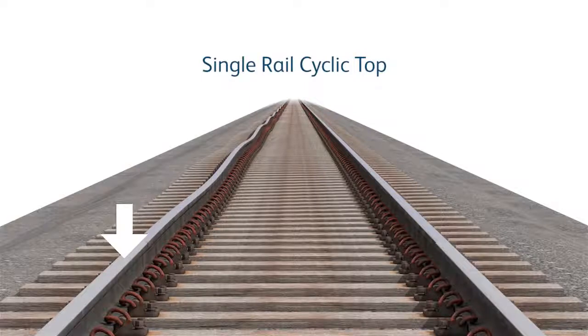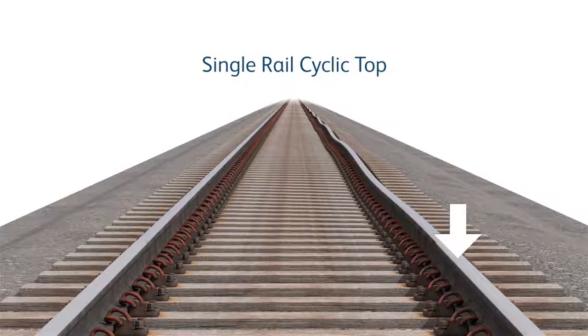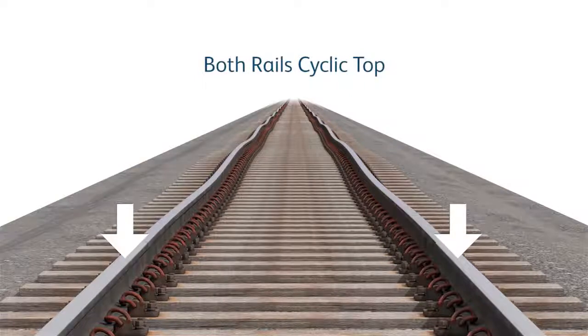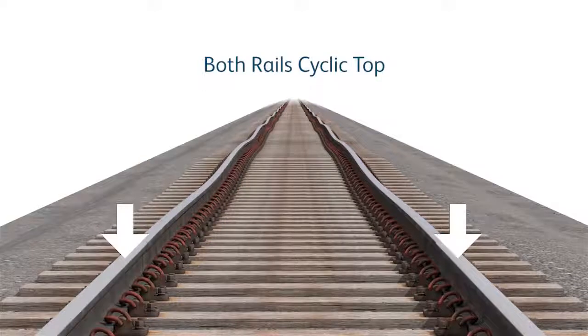Cyclic top can be reported on the left rail, right rail or as both rails. Single rail cyclic top is possible because there are situations where a trigger is only on one rail.